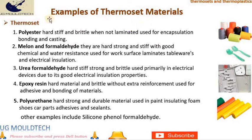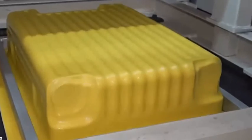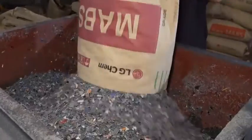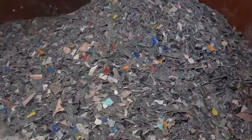Examples of thermoset materials include: 1. Polyester — hard, stiff and brittle when not laminated, used for encapsulation, bonding, and casting. 2. Melamine formaldehyde — hard, strong and stiff with good chemical and water resistance, used for work surface laminates, tablewares, and electrical insulation. 3. Urea formaldehyde — hard, stiff, strong and brittle, used primarily in electrical devices due to its good electrical insulation properties. 4. Epoxy resin — hard and brittle without extra reinforcement, used for adhesives and bonding of materials. 5. Polyurethane — hard, strong and durable, used in paint, insulating foam, shoes, car parts, adhesives and sealants. Other examples include silicone and phenol formaldehyde.